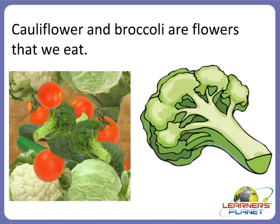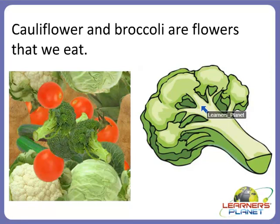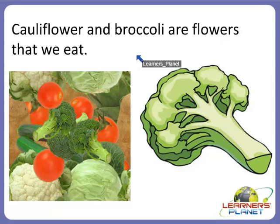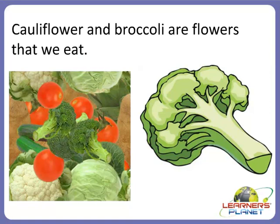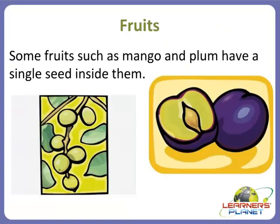There are some examples such as cauliflower and broccoli — these are flowers that we eat. There are also some flowers that have a sweet-smelling substance called nectar, and the nectar attracts insects towards the flowers.